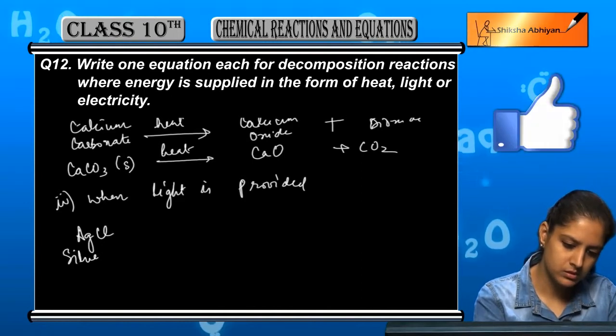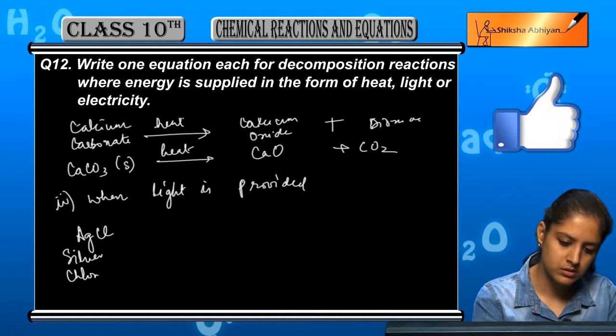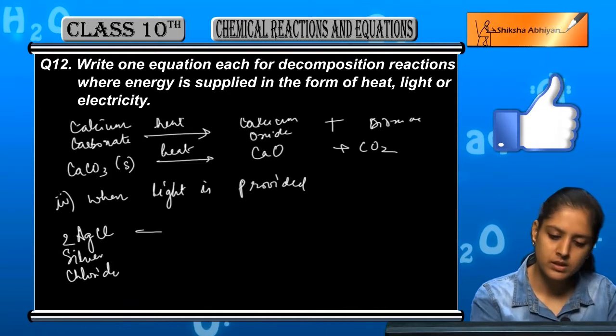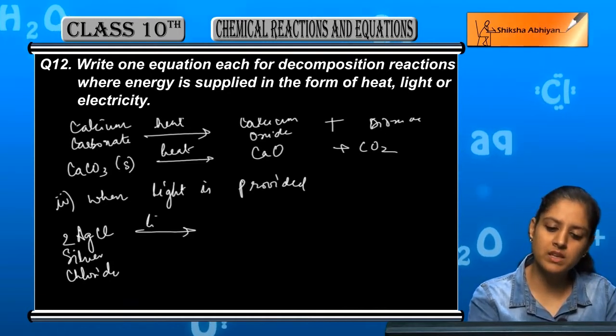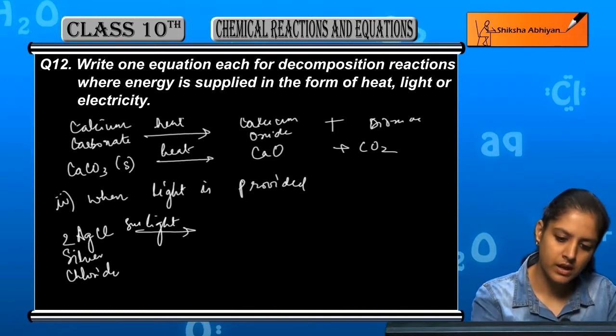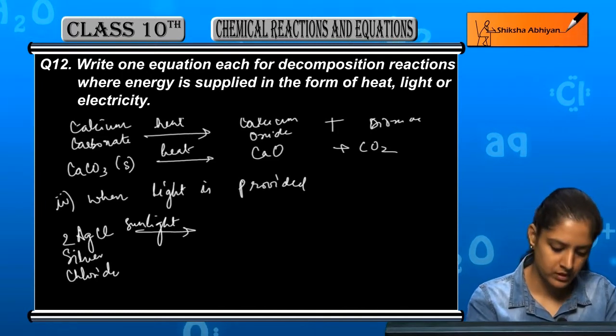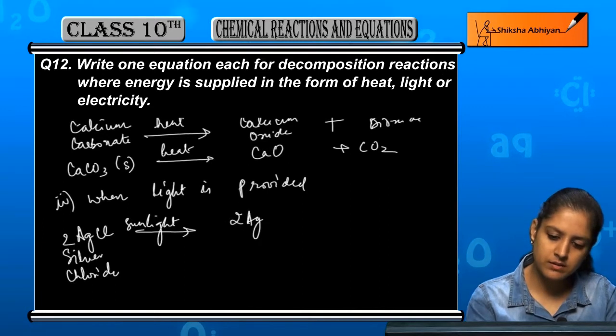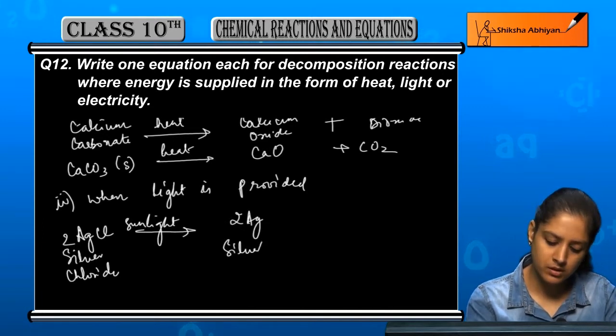AgCl decomposes by the action of light and sunlight, forming silver metal and chlorine gas.